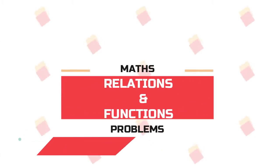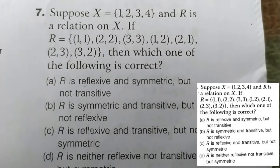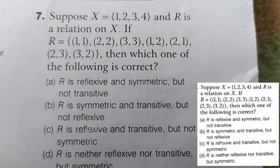Let's do the first question. X is the set {1, 2, 3, 4}. The relation is defined on this set.